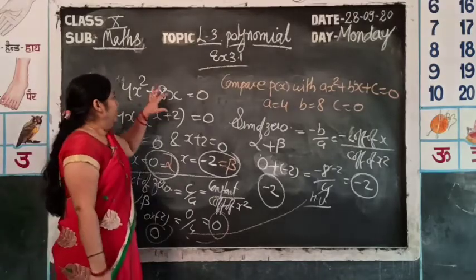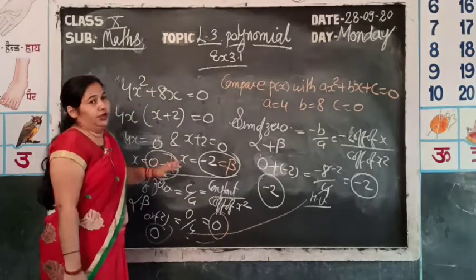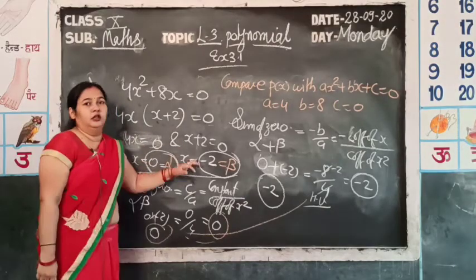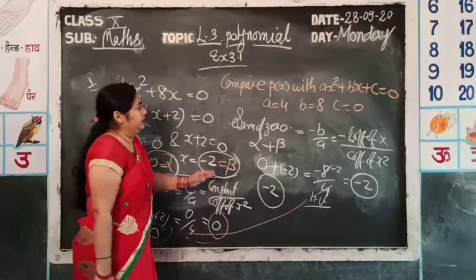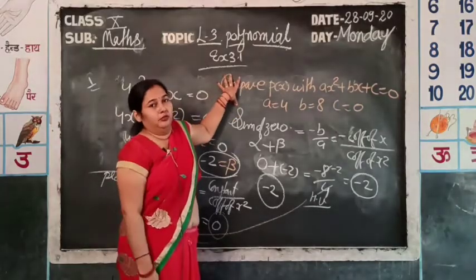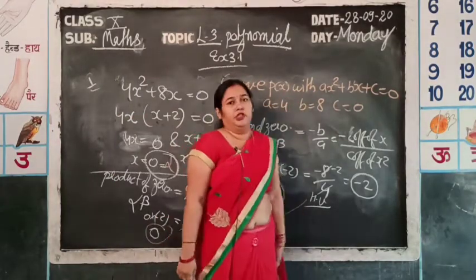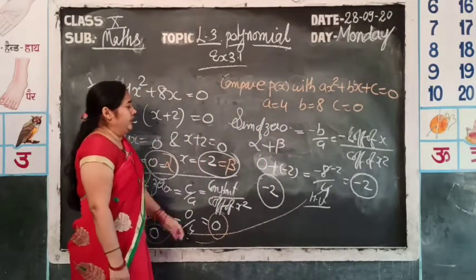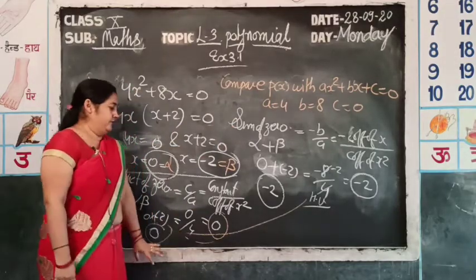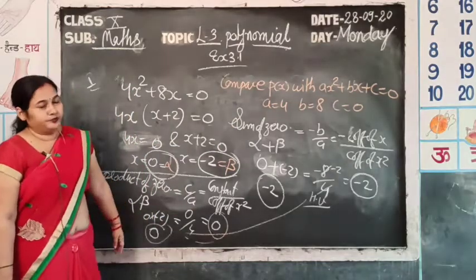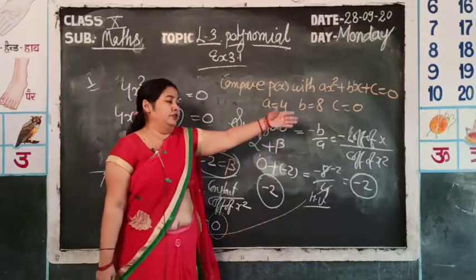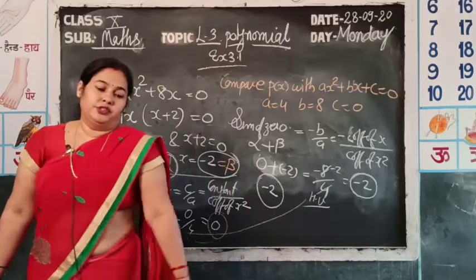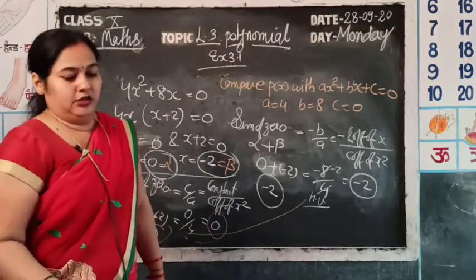To summarize the method: first do factorization of the polynomial, get alpha and beta. Then compare with ax² + bx + c to get a, b, c values. Then find sum of zeros = alpha + beta and check it equals -b/a. Then find product of zeros = alpha × beta and check it equals c/a. Both should match — same answer means verified.